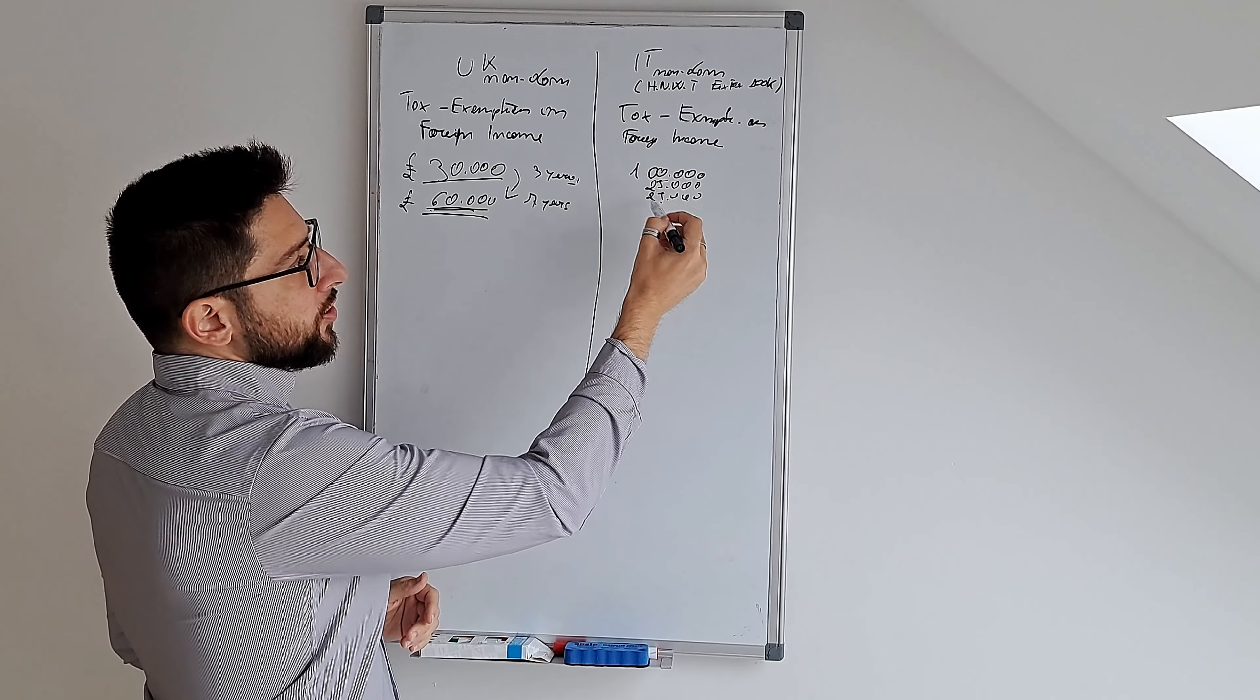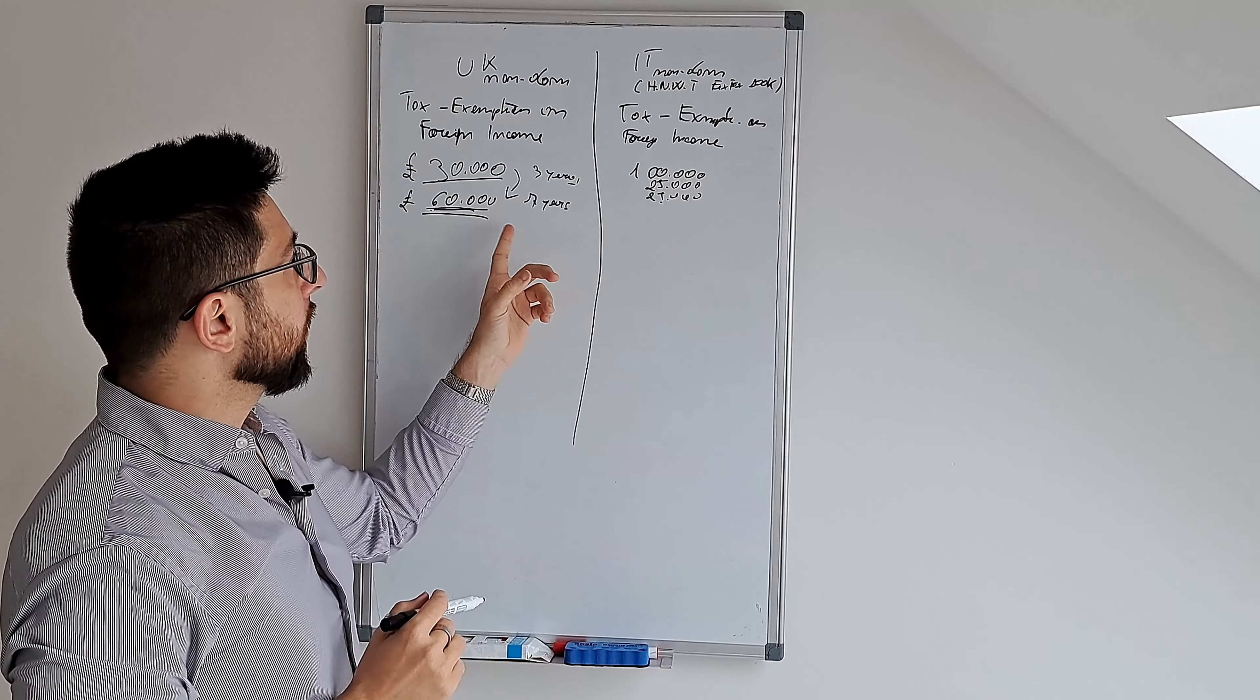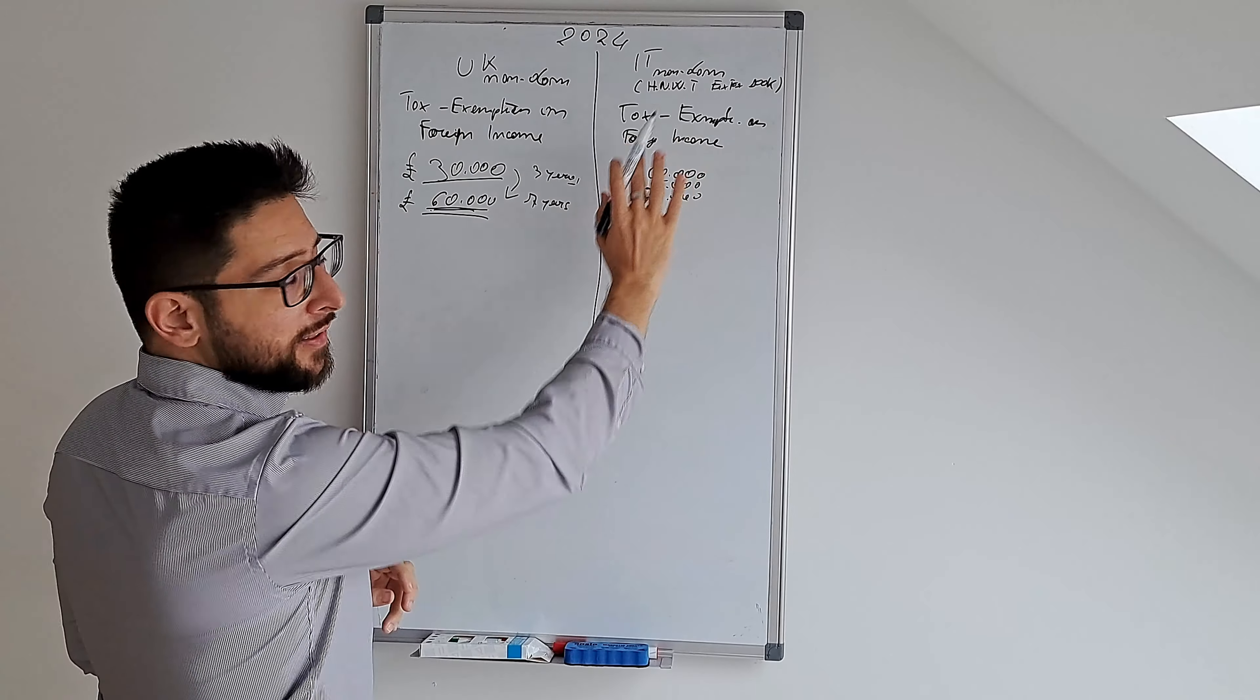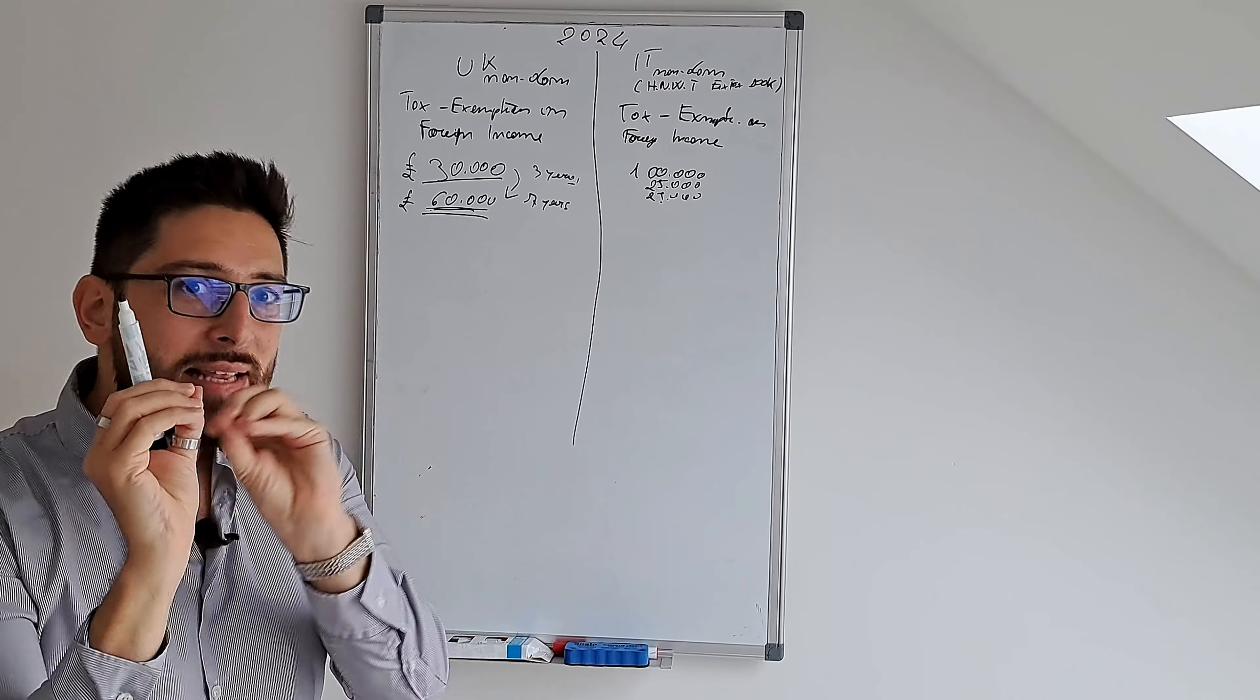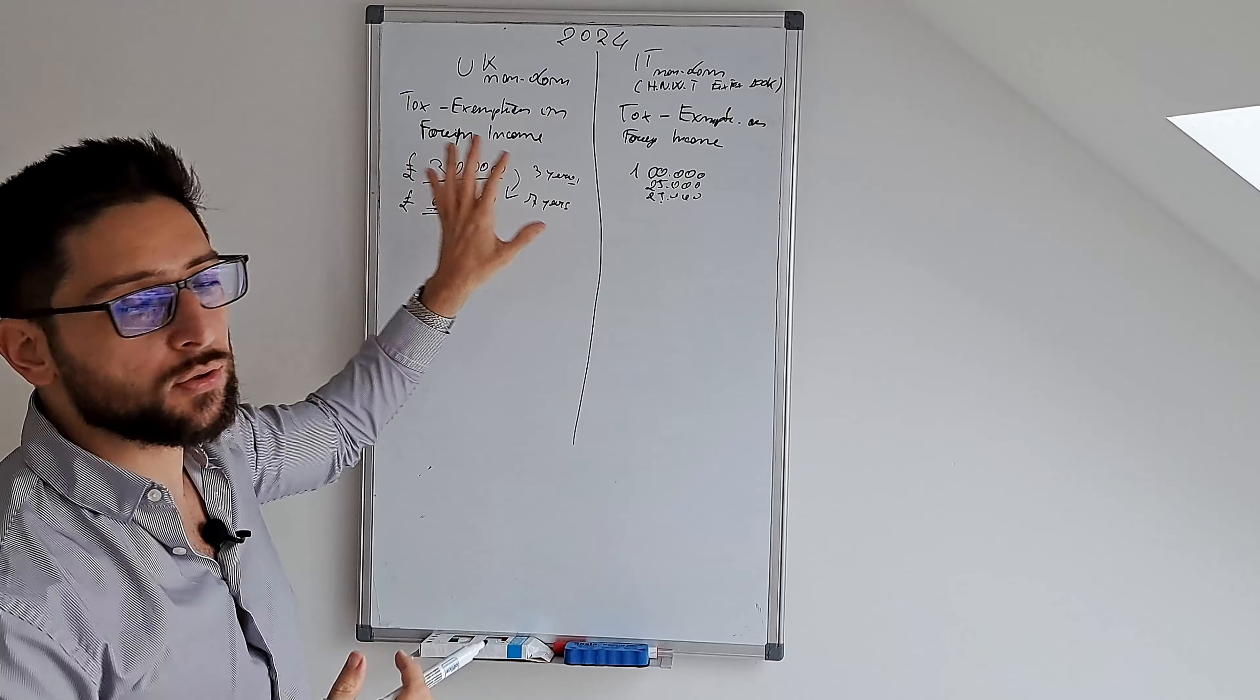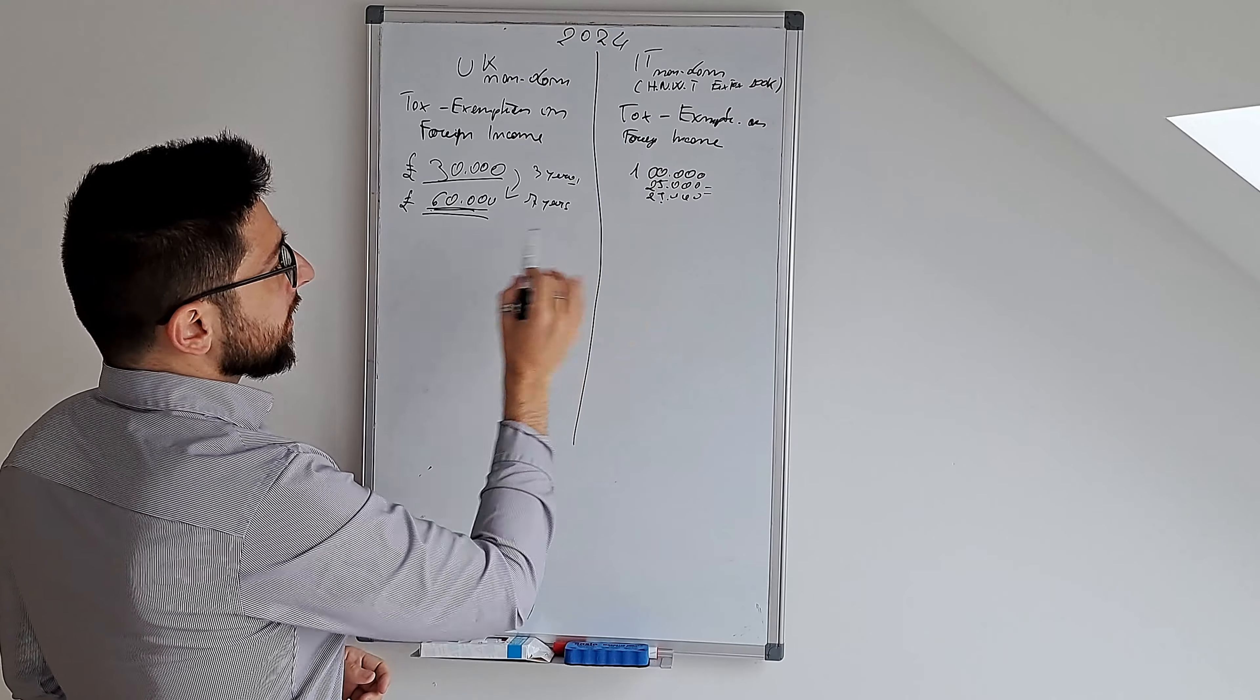Of course, this tax regime makes a lot of sense if you're a family. Each one of you makes a million euro, and then it's extremely favorable compared to the UK. But keep in mind, we are comparing in 2024 the two tax regimes. This regime will disappear in 2025, so the only chance for you is Italy. I wanted to make sure to understand the similarities between these two non-dom regimes and why we call it Italian non-dom, because it's so similar to UK non-dom that we could make this parallelism.